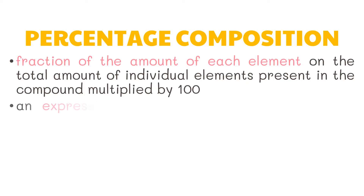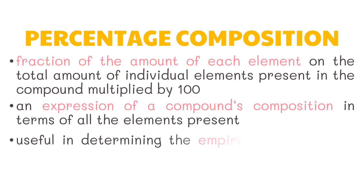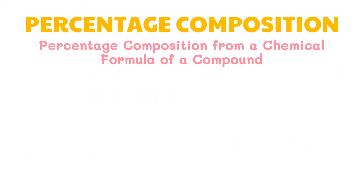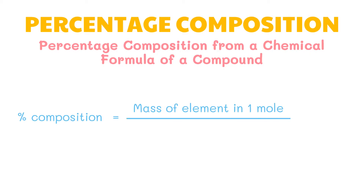Percentage composition is simply an expression of a compound's composition in terms of all the elements present. Knowing the percentage composition in a compound is useful in determining the empirical formula of a chemical substance, which will be discussed in higher grade levels. The percentage composition of a compound can be determined from the chemical formula of a compound using this formula: percentage composition equals mass of element in one mole over molar mass of the compound, times 100 percent.